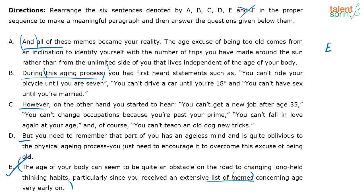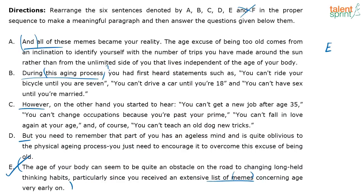A makes reference to the memes but doesn't directly give an example. B and C do. B says: 'You can't ride your bicycle until you're seven, you can't drive a car until you're 18, you can't have sex until you're married.' C says: 'You can't get a new job after age 35, you can't change occupations because you're past your prime, you can't fall in love again at your age, you can't teach an old dog new tricks.' So B and C give examples of that list of memes. Now, out of B and C, which comes first? There is a sequence clue word.